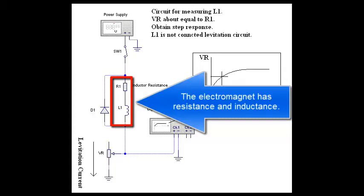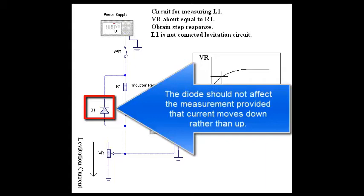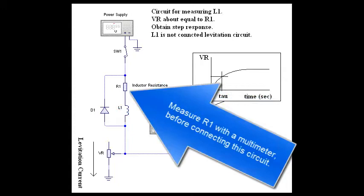The electromagnet has resistance and inductance. The diode should not affect the measurement provided that current moves down rather than up. Measure R1 with a multimeter before connecting this circuit.